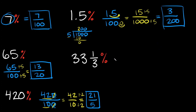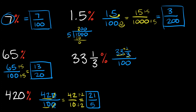The last problem is 33 and a third percent. Again, whatever number you have here just put it over 100 — that's step one. So I have 33 and one-third over 100. This mixed fraction we have to turn into an improper fraction. To do that, multiply the whole number and the denominator — so 3 times 33 — then add the numerator at the end.